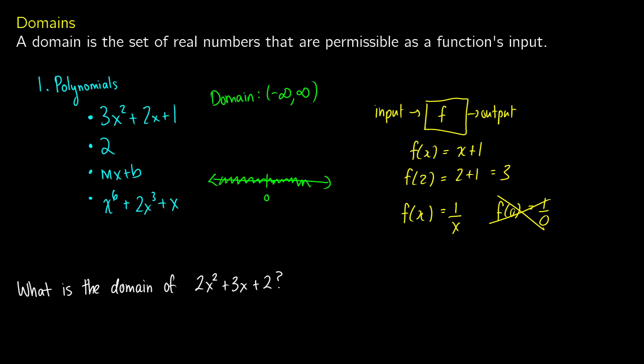This notation means it goes down to negative infinity and up to positive infinity. We use parentheses and not square brackets because infinity and negative infinity don't have an end point — if something has an end point, we'd use square brackets. So if we ask what is the domain of 2x squared plus 3x plus 2, this is just a nice polynomial. All of our x's have whole number powers: x to the 2, x to the 1, and the constant is 2x to the 0. So the domain is negative infinity to positive infinity — you can put any value of x in there and get an output.